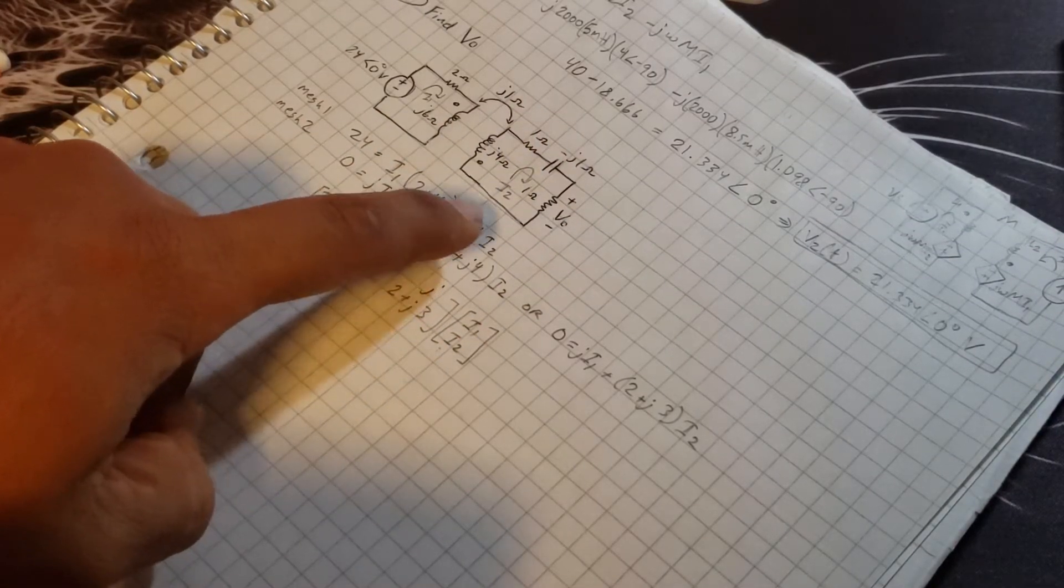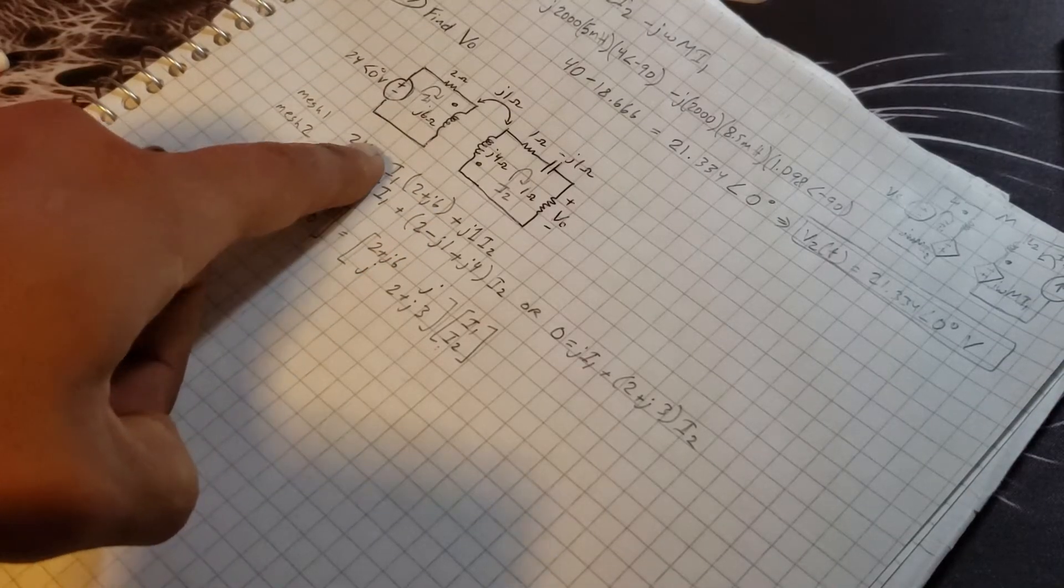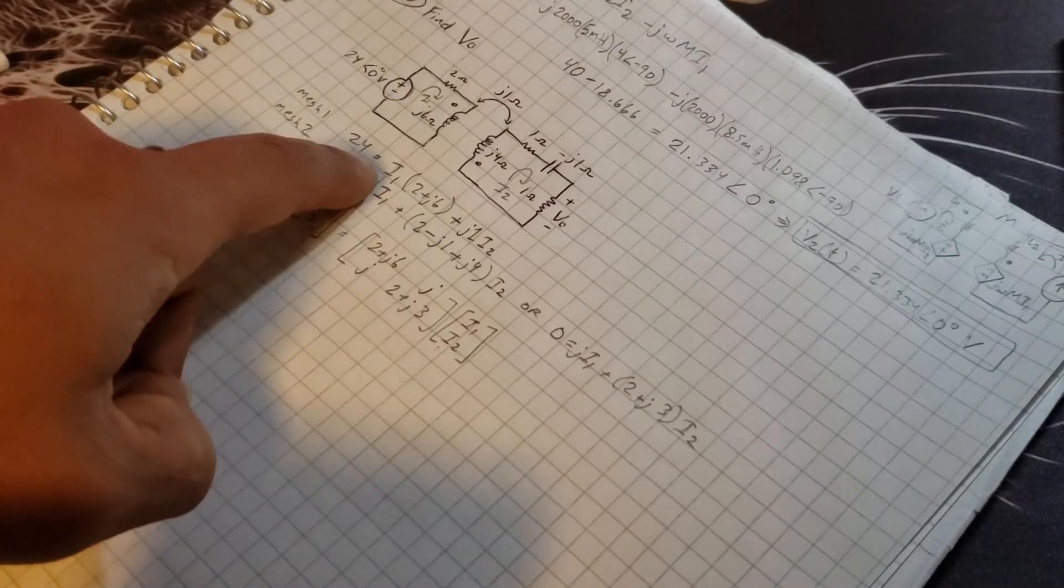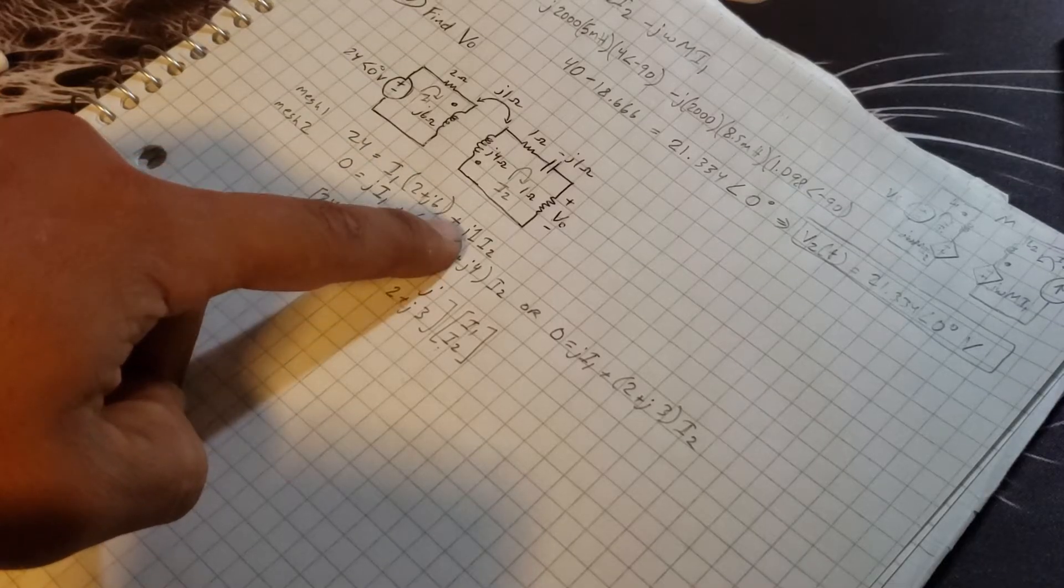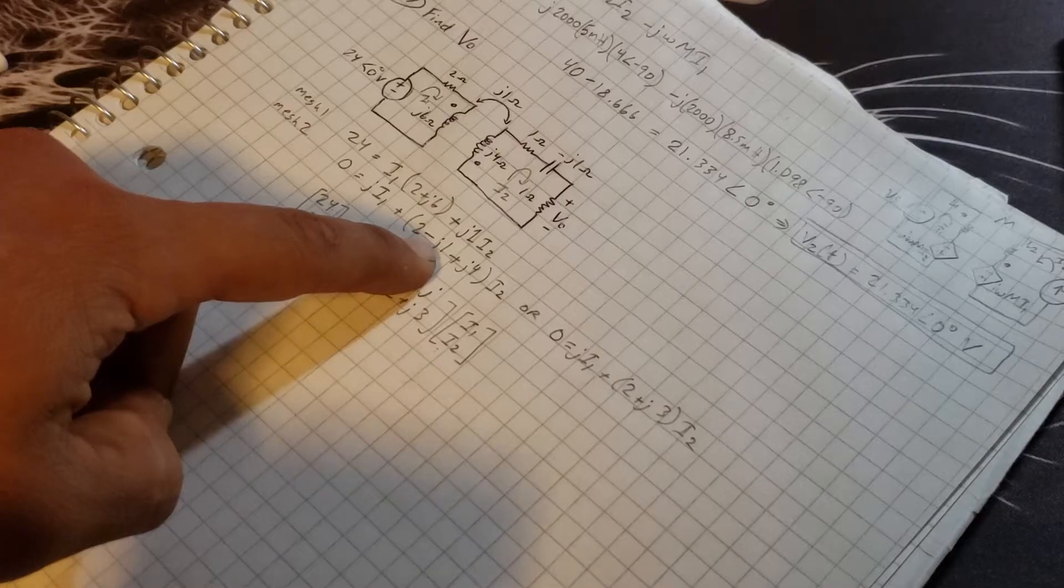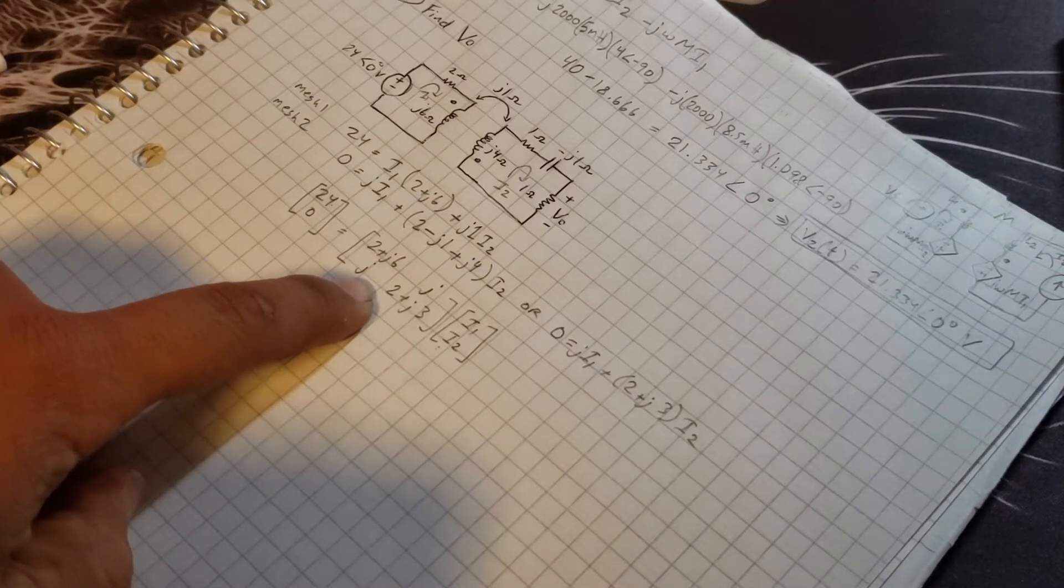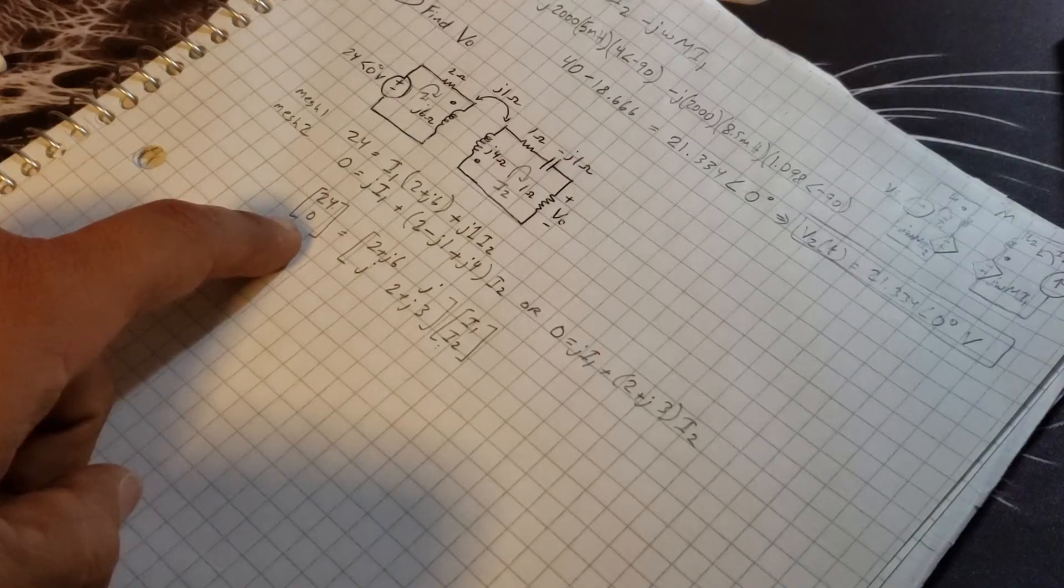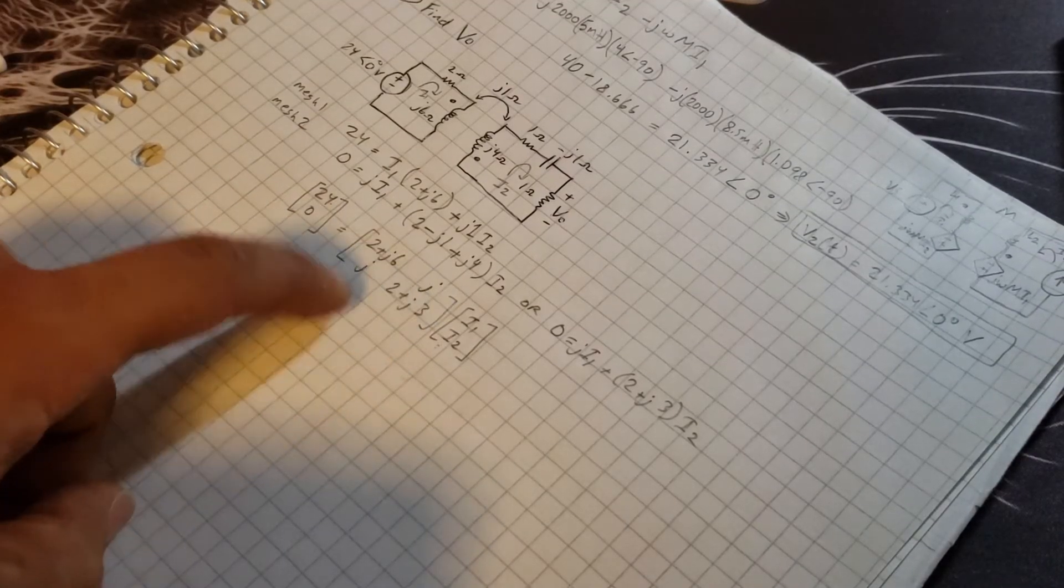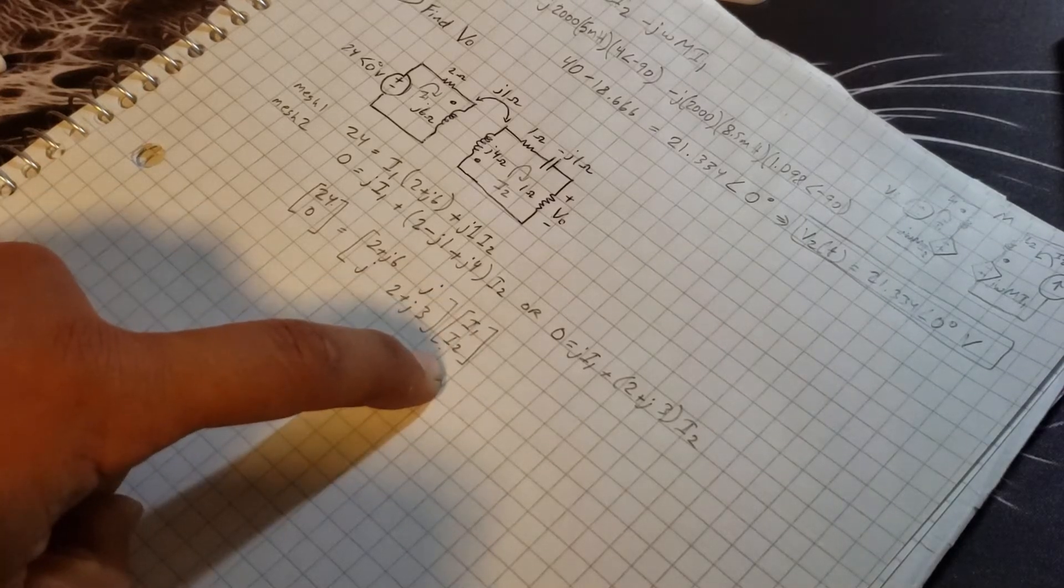I've already gotten the two mesh analysis equations. The first one is 24 equals i1(2 + j6) + j(i2). The second one is 0 equals j(i1) + i2(2 + j3). I've put it in a matrix: 24, 0; 2 + j6, j; j, 2 + j3. I'm looking for current i1 and i2.